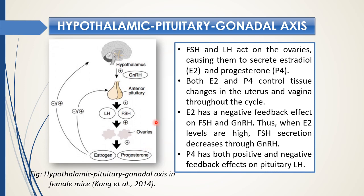Their interplay is very important, and that relationship is called hormonal feedback. They have two types of relationship: positive feedback and negative feedback. For example, in the initial stage of proestrus, FSH is minimal in circulation. As it slowly increases, estrogen is produced from the ovary, and that minimum level of estrogen initiates more FSH from the anterior pituitary — this positive initiation is called positive feedback of estrogen on FSH.